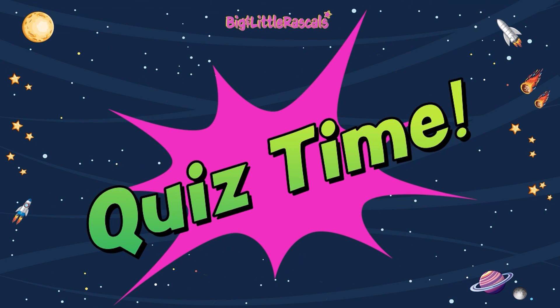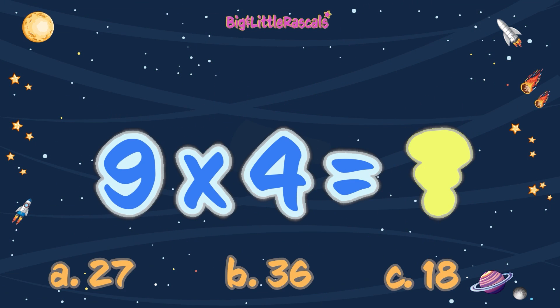Now, the last quiz is for multiplication by 9. Let's choose A, B, or C for the correct answer. Ready? Let's do it! 9 times 4 equals: A) 27, B) 36, C) 18. Which one is correct? Write down your answer. The answer is B, 36. Awesome!